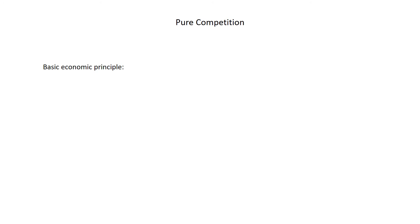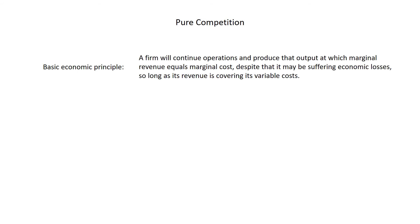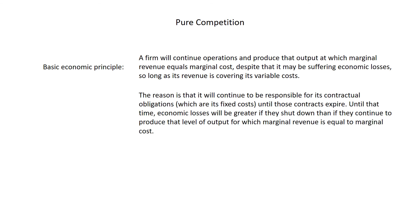Before we continue analyzing this model of the purely competitive firm, let's deal with this basic economic principle. A firm will continue operations and produce that output at which marginal revenue equals marginal cost, despite suffering economic losses, so long as its revenue is covering its variable costs. The reason is that it will continue to be responsible for its contractual obligations — its fixed costs — until the contracts expire. Until that time, losses will be greater if they shut down than if they continue to produce at the level where marginal revenue equals marginal cost.